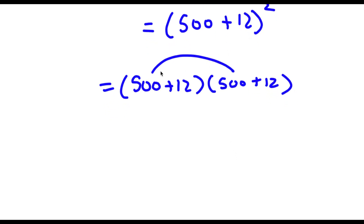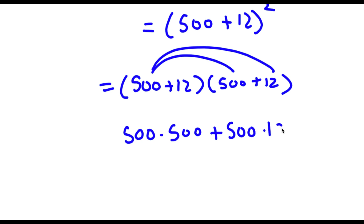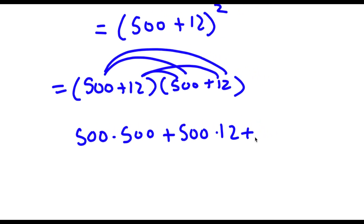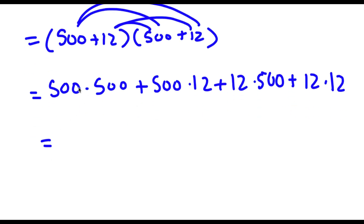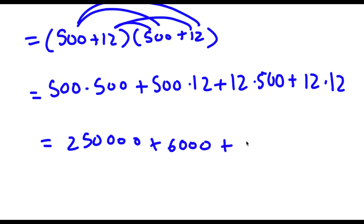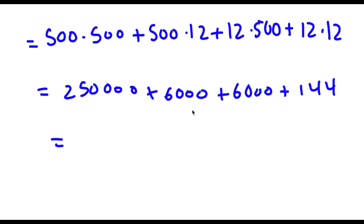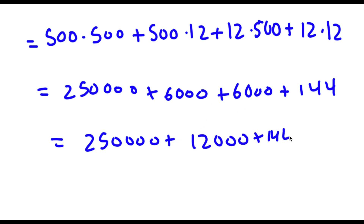Distributing, I get 500 times 500 plus 500 times 12 plus 12 times 500 plus 12 times 12. That's 250,000 plus 6,000 plus 6,000 plus 144. Adding these together: 250,000 plus 12,000 is 262,000, plus 144 is 262,144. So 2 to the power of 18 equals 262,144.